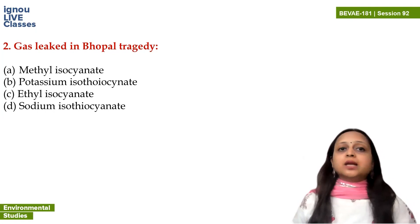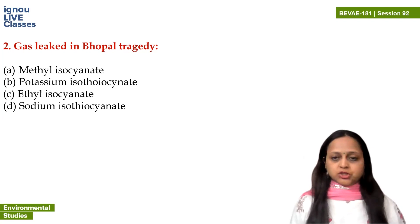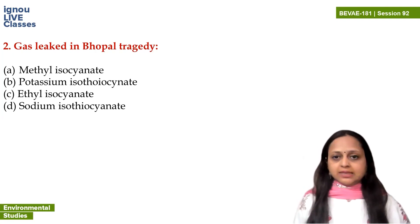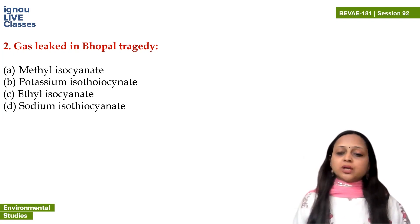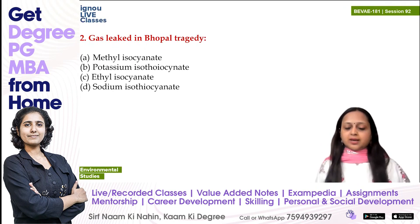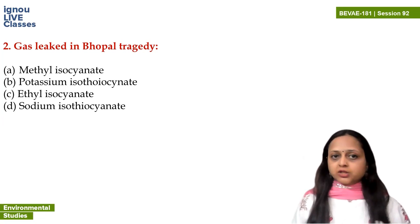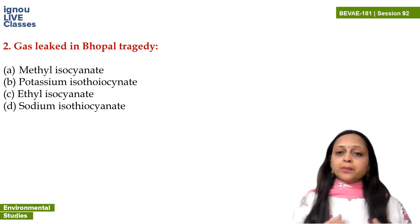The next question is: what gas leaked in the Bhopal gas tragedy? It was a chemical accident that happened on 3rd December 1984 in Bhopal, Madhya Pradesh. There was a factory called Union Carbide, which made a pesticide. One of the intermediates used was methyl isocyanate, which was stored in the factory to make the final product.